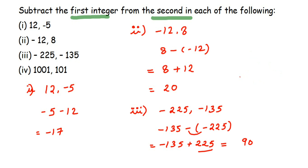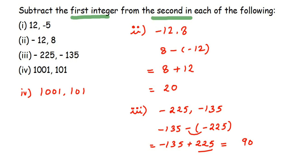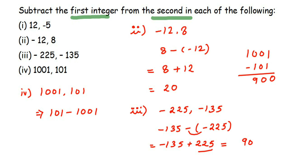The last question: 1001 and 101. It becomes 101 minus 1001. Both numbers have different signs so we subtract: 1001 minus 101 gives 900. Since 1001 is the greater number and its sign is negative, the answer is -900. That's it — I hope this question is clear. If you have any questions or doubts, drop a comment. Thank you so much for watching.